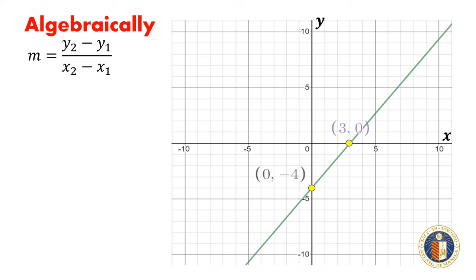Let the point 3, 0 be our x1, y1 and the point 0, negative 4 be our x2, y2.